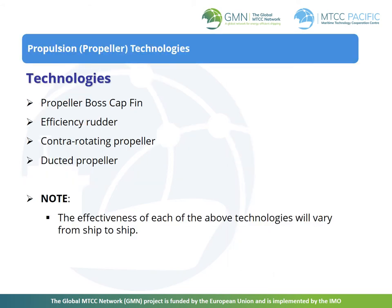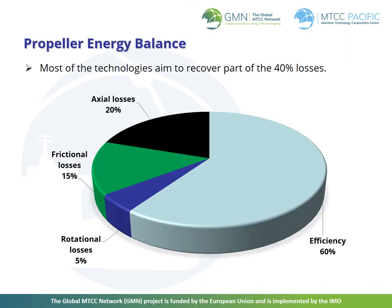One effective way of improving the energy efficiency of a ship is to upgrade shipboard technologies to more energy efficient ones. The upgrading of technologies is not a shipboard activity, but nevertheless shipboard staff can always engage in proposing such technologies. This slide shows the propeller energy balance and most of the technologies aim to recover part of the 40% losses. There are devices that can be placed at the fore of the propeller to recover some of the lost energy and increase the overall efficiency. These devices are normally cost effective as a retrofit option with a short payback period, provided they can be fitted correctly.